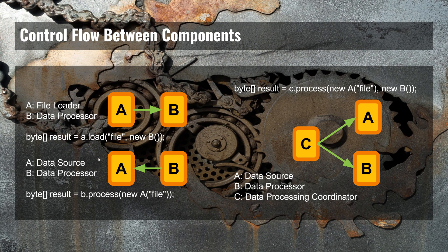Another way to design the exact same functionality would be to have A be an abstract data source and B still be a data processor. Then you would create an instance of the data processor, call its process method, and pass a new instance of a data source to process. B will then call the data source and get it to load the data, then it will process the data and return the result.